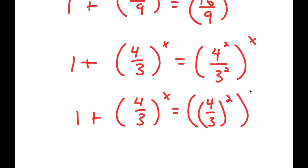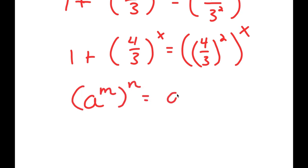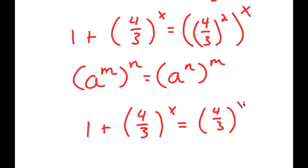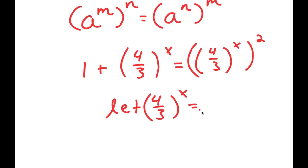Now 4 squared over 3 squared is the same thing as 4 over 3 squared. If I have something in the form a to the power of m to the power of n, this equals a to the power of n to the power of m. So 4 over 3 to the power of 2 to the power of x can be rewritten as 4 over 3 to the power of x to the power of 2. I'm going to let 4 over 3 to the power of x equal to the variable u.